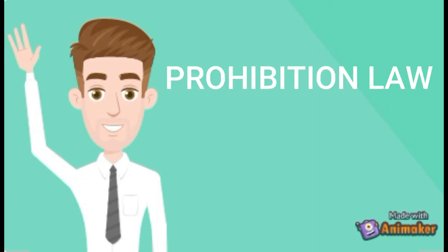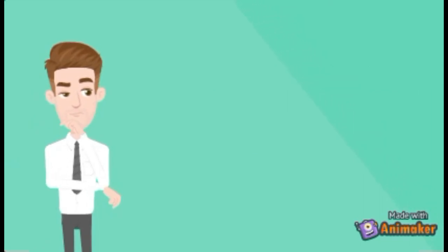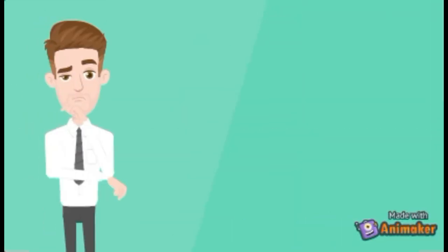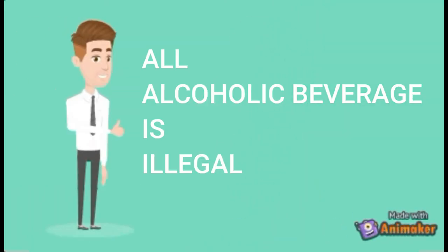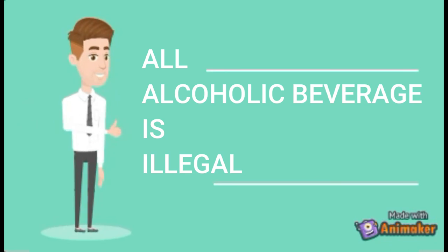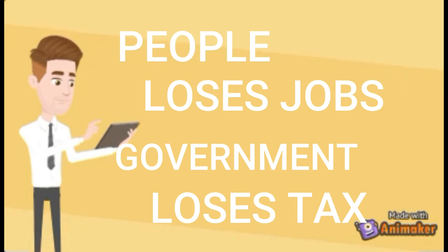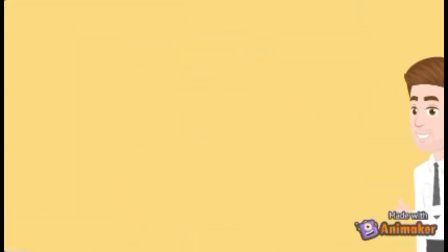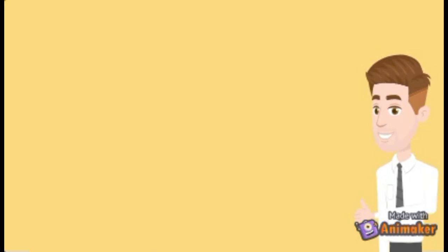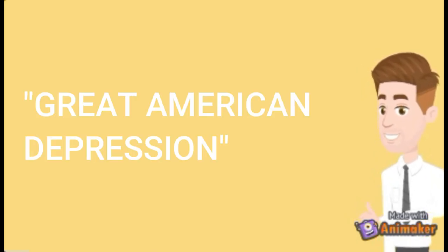The implementation of the Prohibition Law started during the 1880s and was formally passed in the 1920s, also known as the 18th Amendment Law, where all alcoholic beverage manufacturers, sellers, and importation of alcoholic beverages in America became illegal. This caused many people to lose their jobs, and the government lost a large amount of tax revenue. In fact, according to American historians, this implemented law is also known as the Great American Depression.